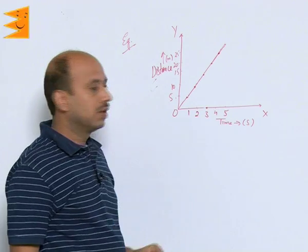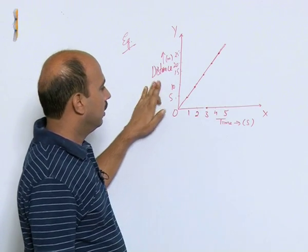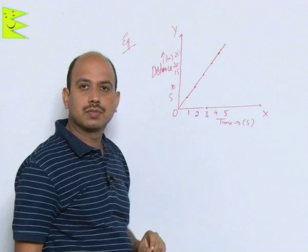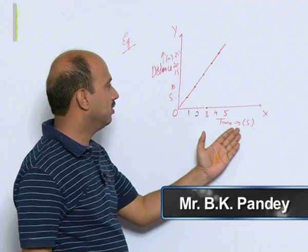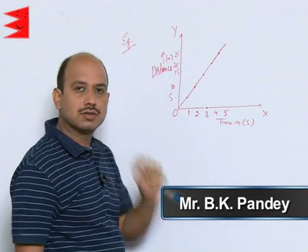Now, see this example. There is a graph between distance and time. Here time is given in seconds, distance is given in meters.